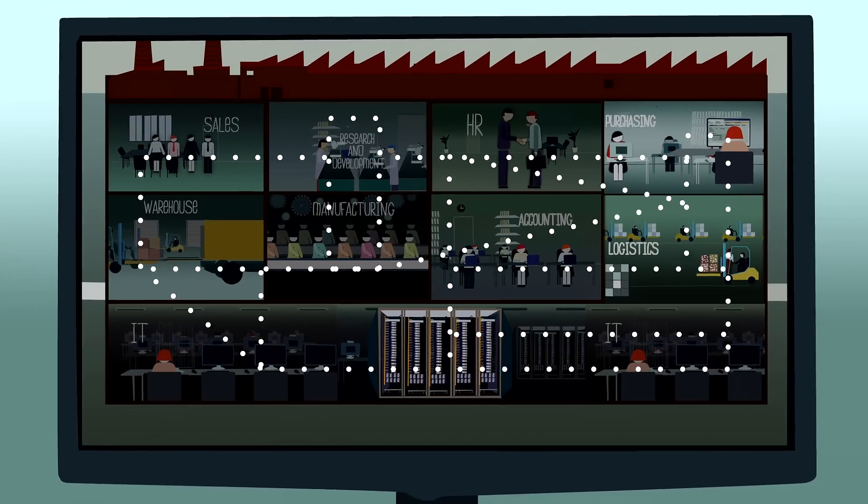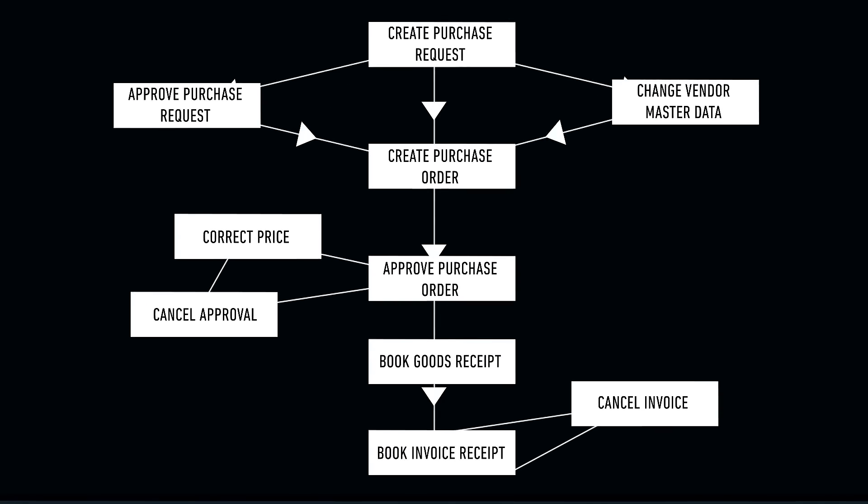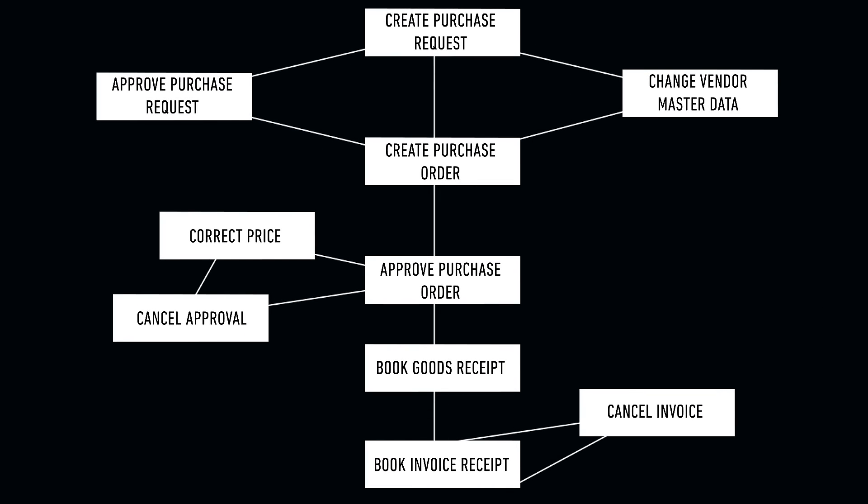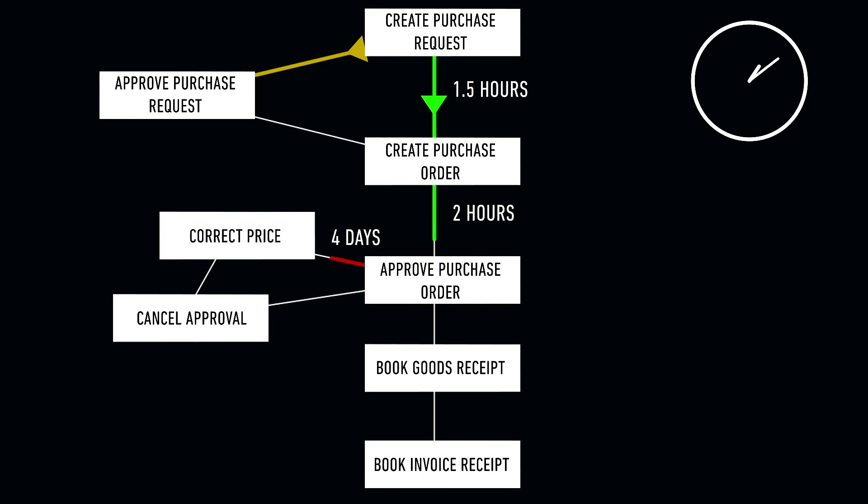But Salonis process mining technology gathers all process trails together in real time and visualizes them in the blink of an eye. Deviations from the optimal process, bottlenecks, and other process obstacles can be recognized at a glance.